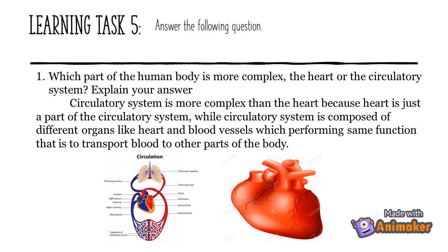Learning Task 5: Answer the guide question. Which part of the human body is more complex — the heart or the circulatory system? Explain your answer. The circulatory system is more complex than the heart because the heart is just a part of the circulatory system. The circulatory system is composed of different organs like the heart and blood vessels, which perform the same function: to transport blood to other parts of the body.